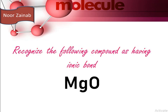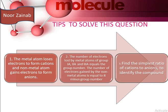To recognize whether a compound has an ionic bond — for example MgO — use these tips: the metal atom loses electrons to form cations and the non-metal atom gains electrons to form anions. The number of electrons lost by metal atoms of groups 1A, 2A, and 3A equals the group number, whereas the number of electrons gained by non-metals equals 8 minus the group number. Find the simplest ratio of cations to anions to identify the compound.